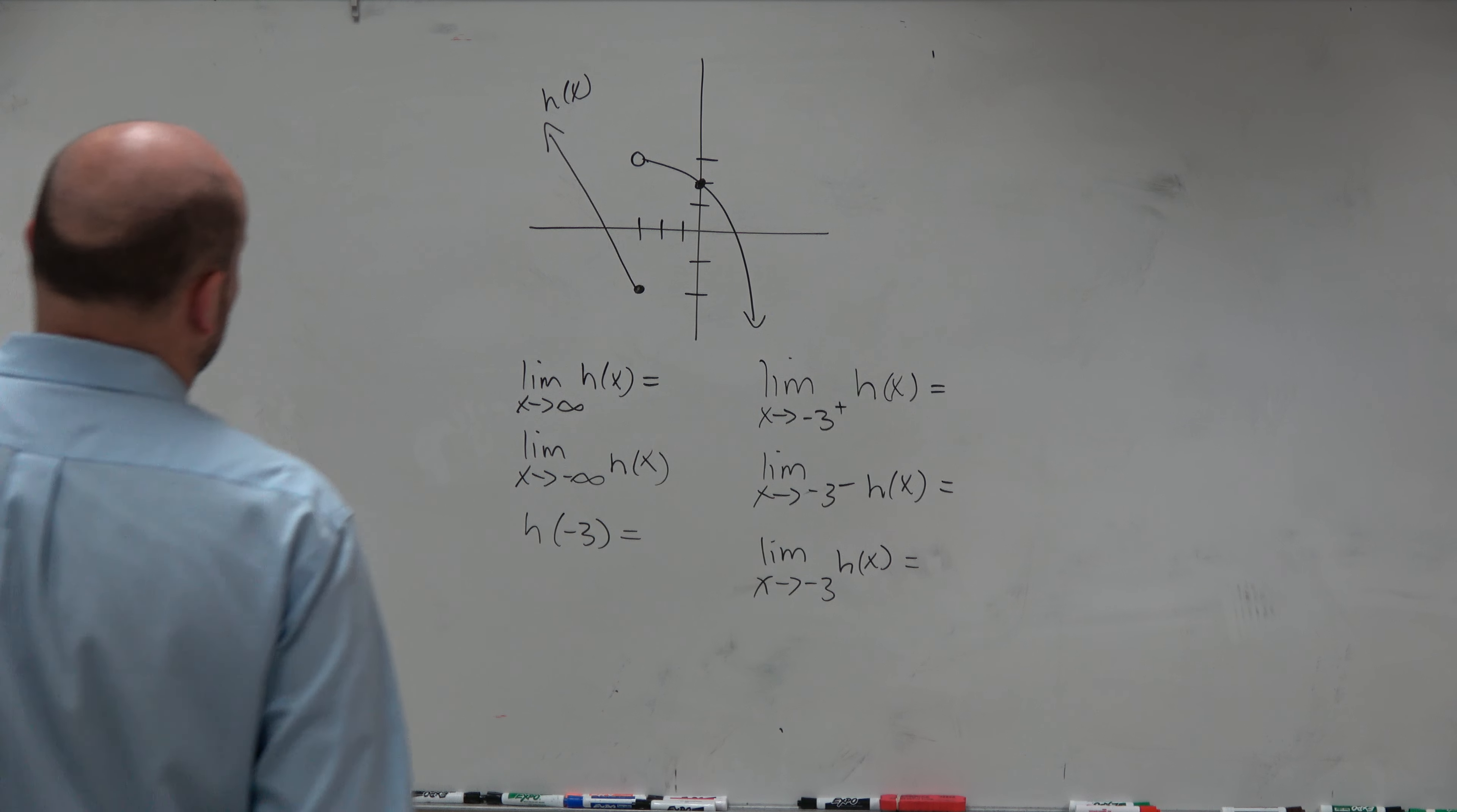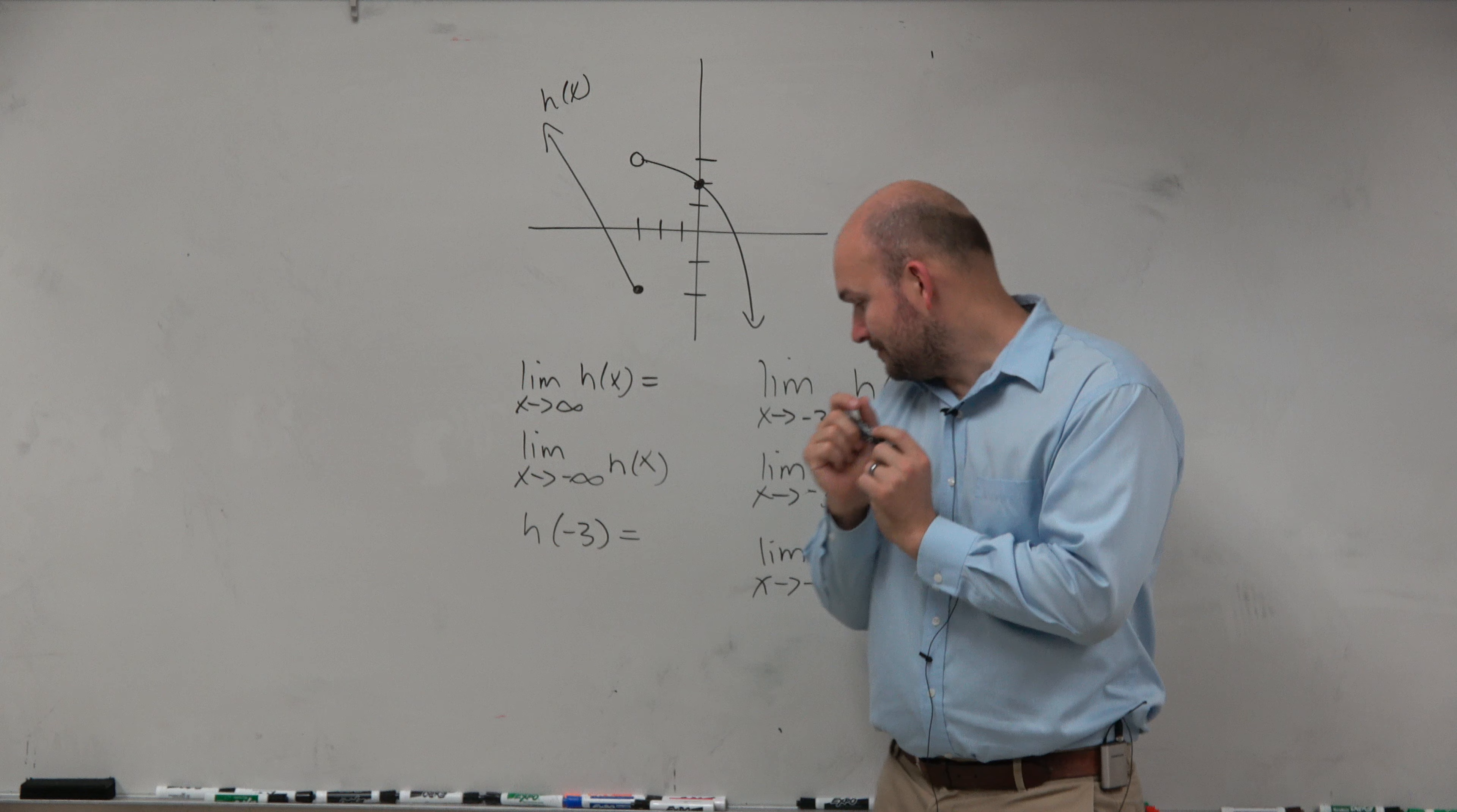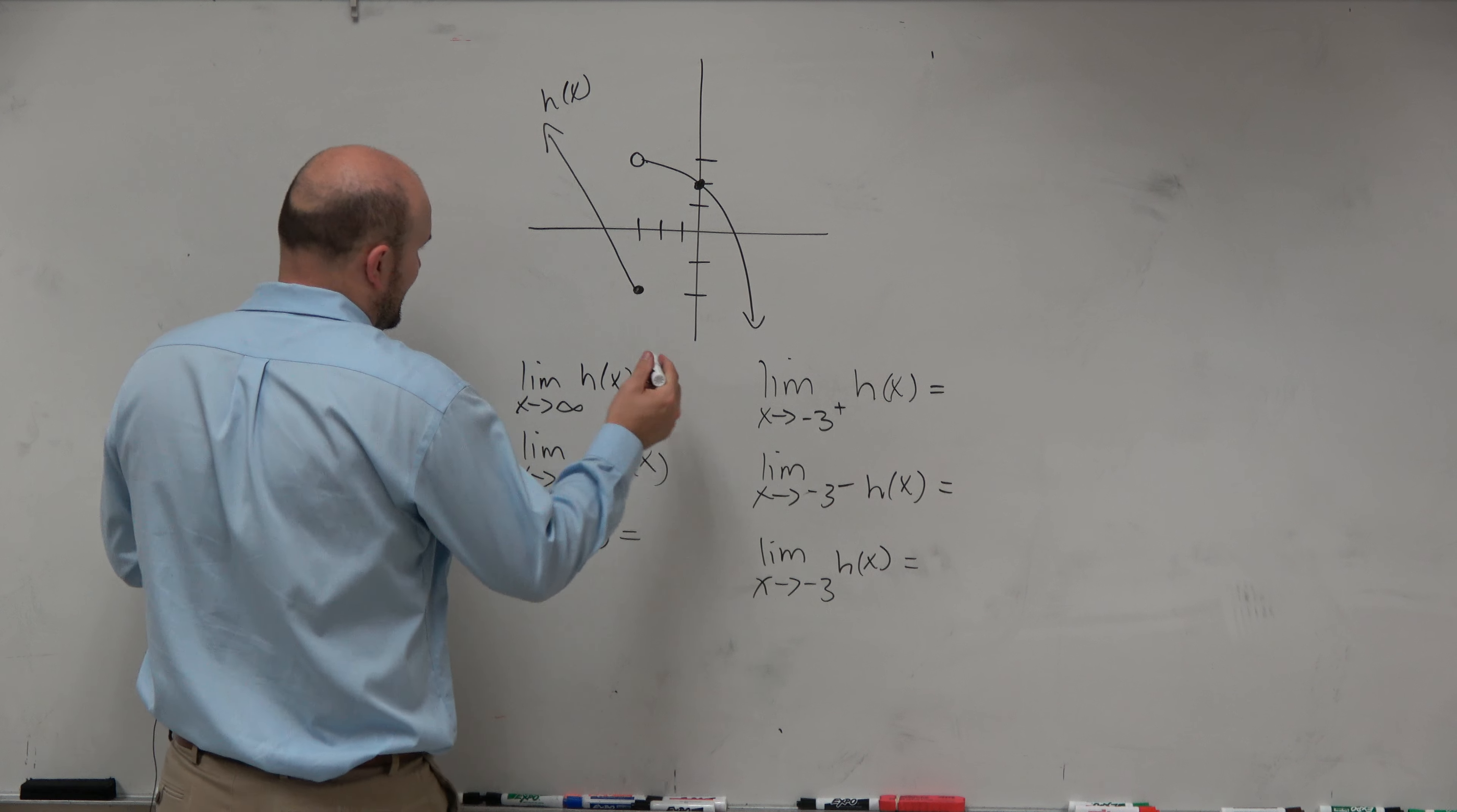So let's go and take a look. First one, end behavior going to infinity. Again, think of just end behavior. We're going to try to go through these relatively quickly. As x goes to infinity, so just take the graph going this way, you jump to the other one, and then you go to infinity, so therefore you're approaching negative infinity, right?